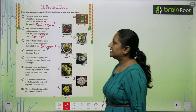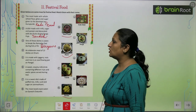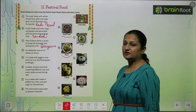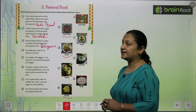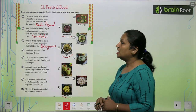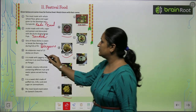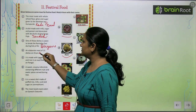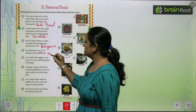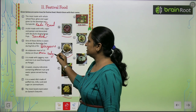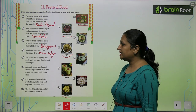An elaborate meal of 13 dishes on Onam. Toh Onam ke festival mein bahut saari dishes bantah hai, around 13 dishes. Inka naam kya hai? Onam sadhya. So you will write Onam sadhya here.